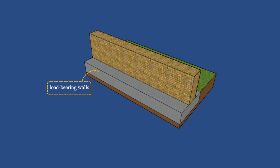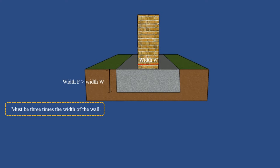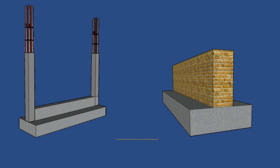Strip footings are commonly used as foundations of load-bearing walls. A strip foundation consists of a continuous strip formed centrally under load-bearing walls, providing a base for walls. The width of this strip is as necessary to spread the load on an area of subsoil capable of supporting the load. The strip must be three times the width of the wall, as the load is transmitted at 45 degrees from the base of the wall to the soil, and the depth must be equal to or greater than the overall width of the wall.